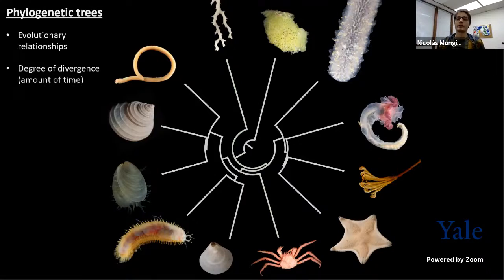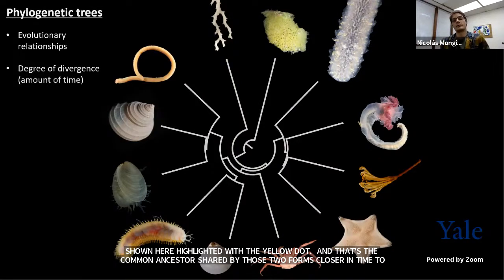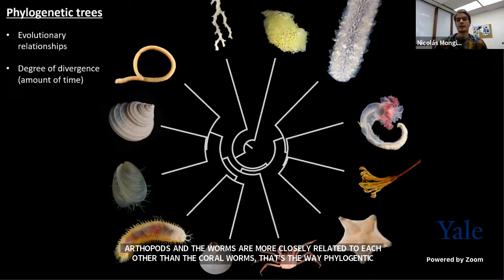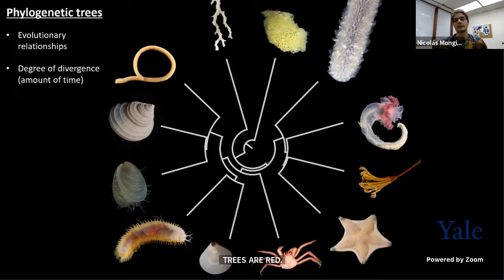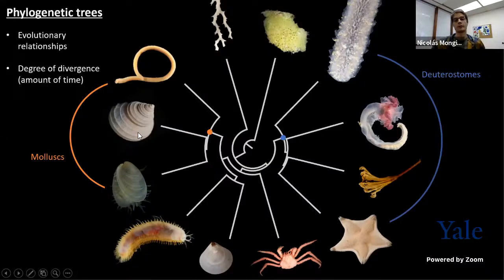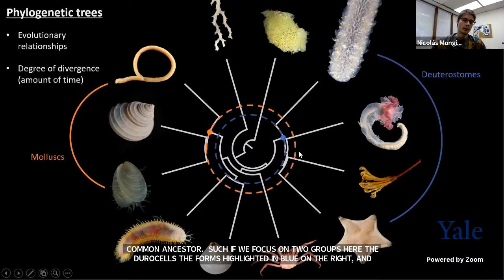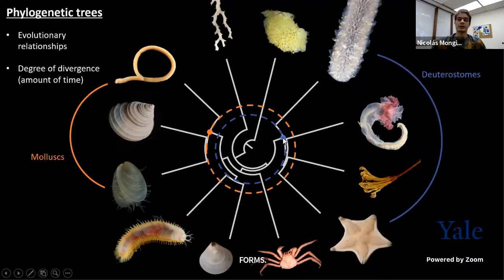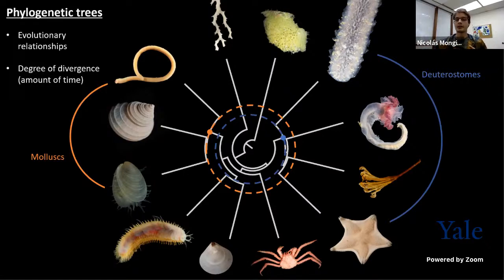Phylogenetic trees also contain information about the degree of divergence between different life forms, which we can express as the amount of time that has passed since two or more lineages shared a common ancestor. If we focus on the deuterostomes — those four forms highlighted in blue on the right — and compare them to the three lineages of mollusks, which include bivalves such as clams and oysters, and snails, we can see that the deuterostomes are a much more ancient group, with their last common ancestor occurring deeper within the tree structure, meaning their main lineages have been evolving independently for much longer.